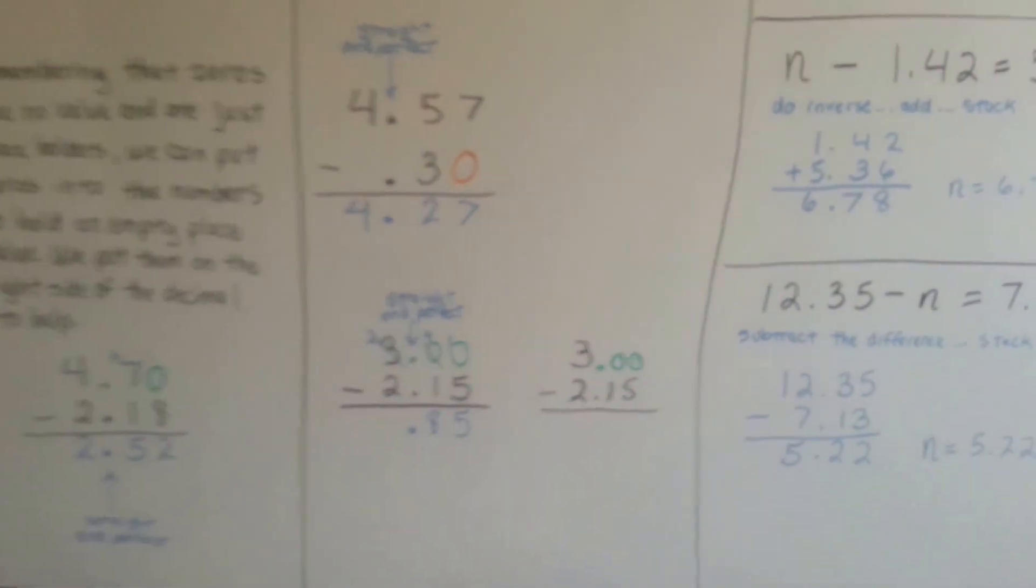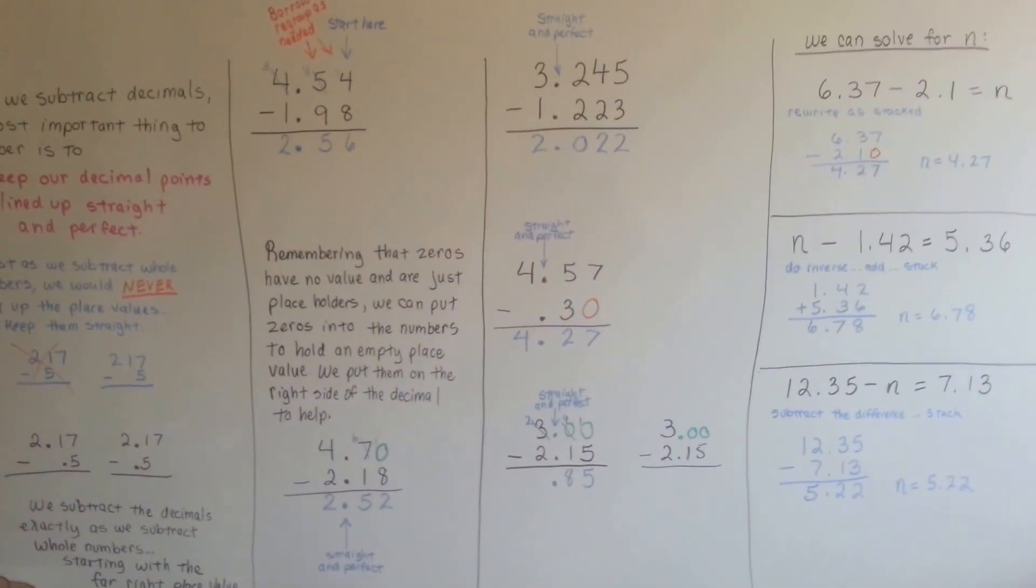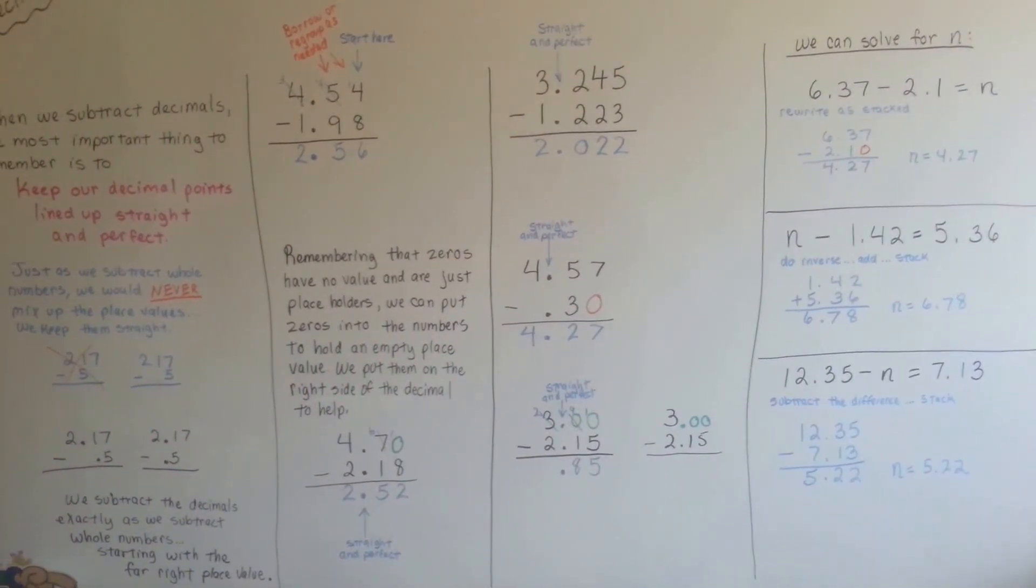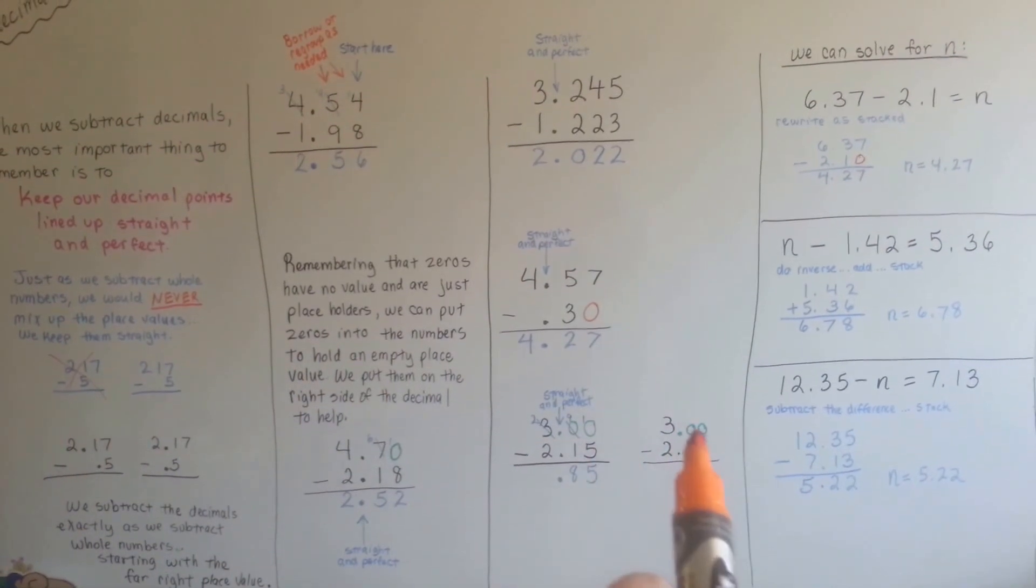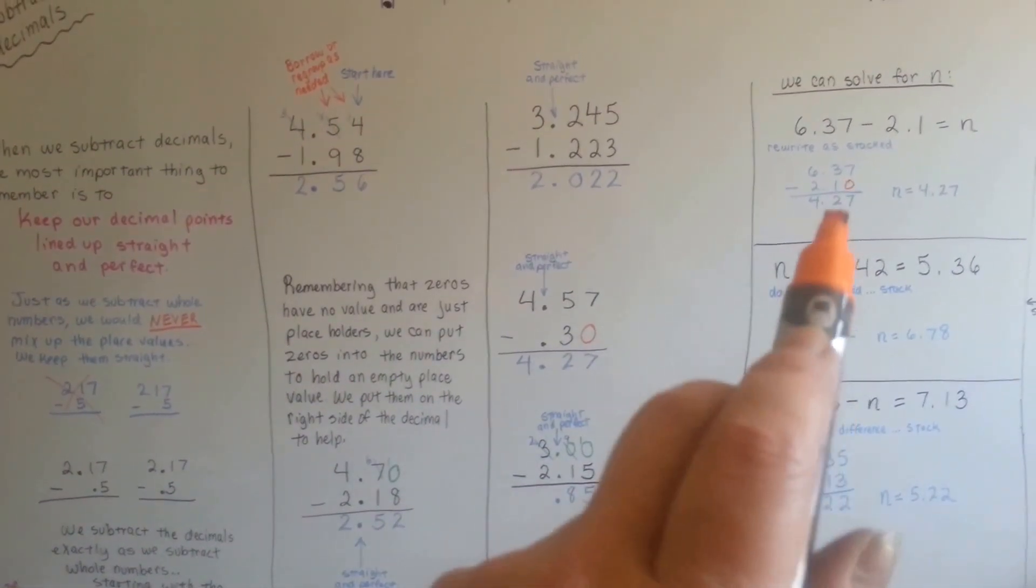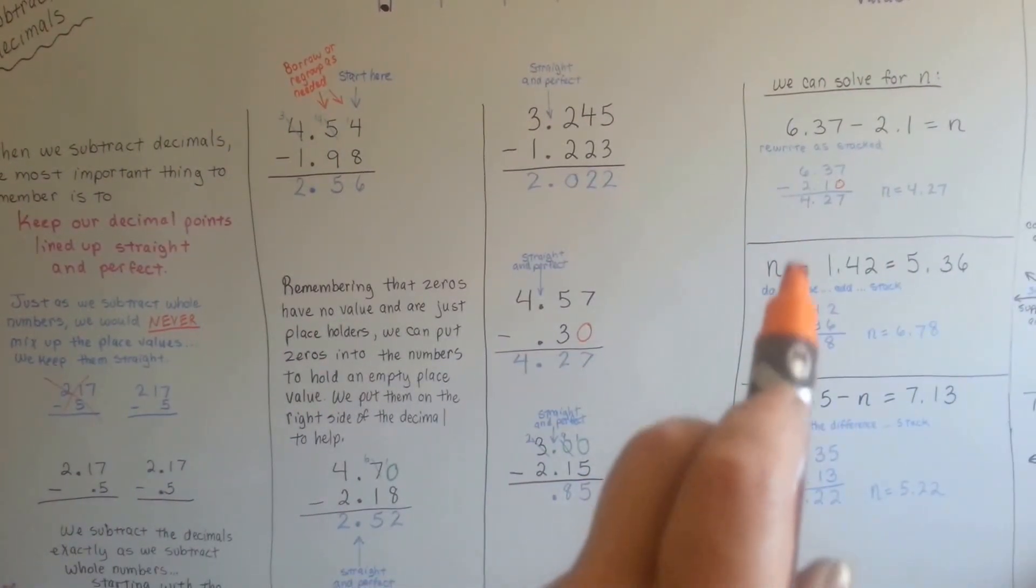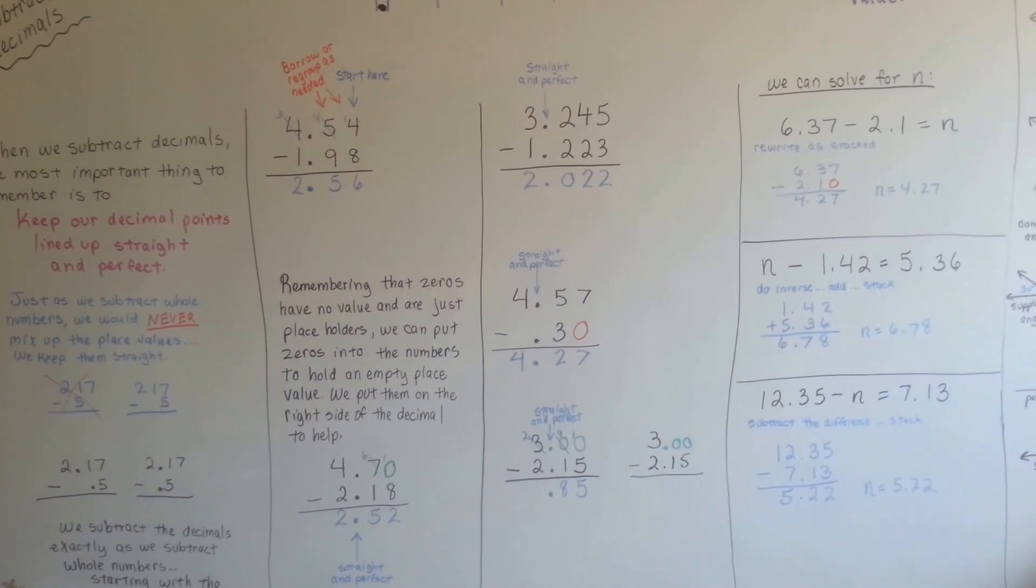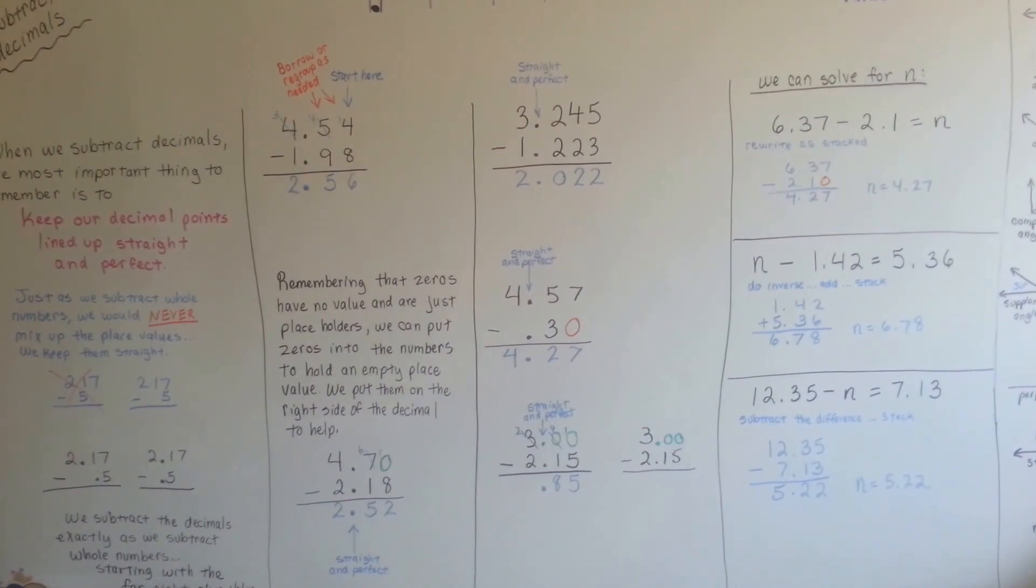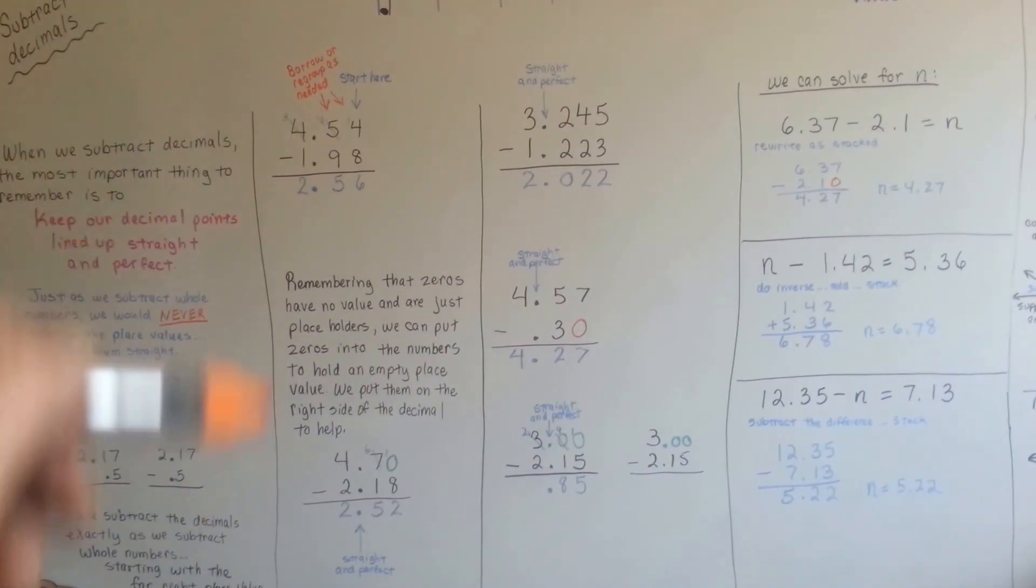So when you're subtracting decimals, just remember to always keep your decimal points pretty and perfect and straight. You can add zeros to the ends of the numbers or even a decimal point if you have to to help you subtract. And if you're solving for n, you can stack them if it's written in a sentence form. And you can do the inverse operation or subtract the difference to help you find n. Right? And you can borrow and regroup no different than if it were a whole number.